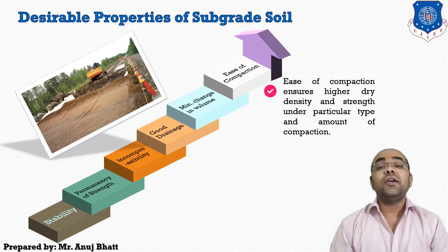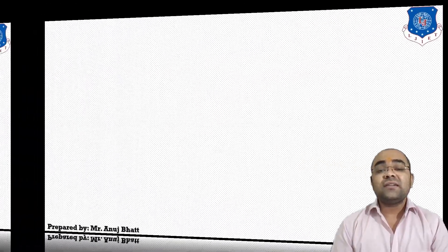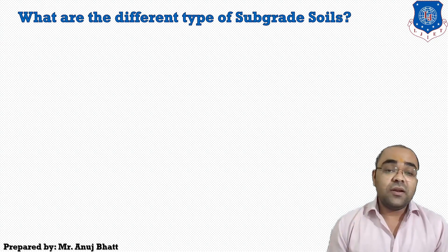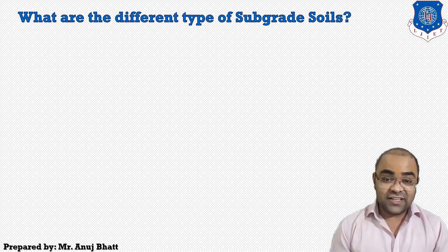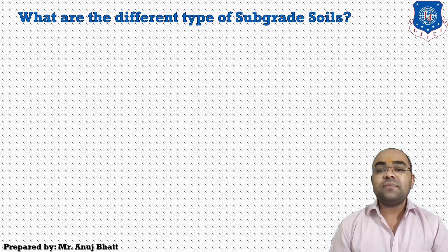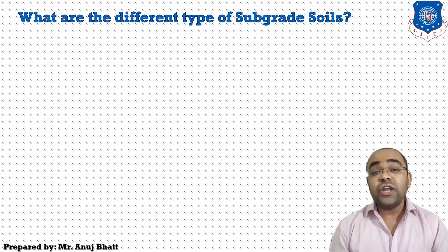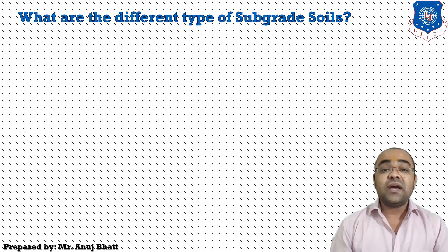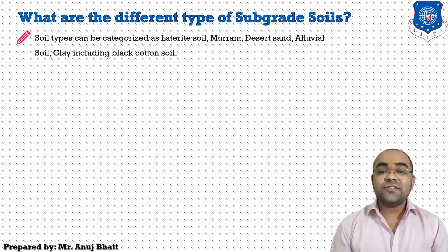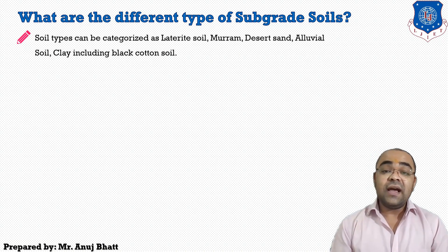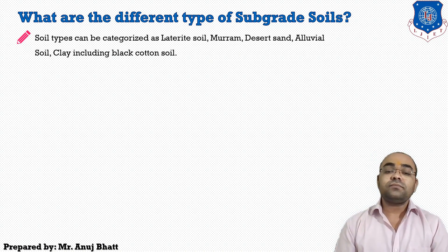The next question that arises is: what are the different types of soil that we can use as subgrade soil? A wide range of soil types are available for highway construction. A survey of locally available materials and soil types conducted in India revealed a wide variety of soil types like gravel, mooram, and naturally occurring soft aggregates which can be used in road construction. Broadly, soil types can be categorized as laterite soil, mooram (also known as red soil), desert sands, alluvial soils, and clay soil including black cotton soil.